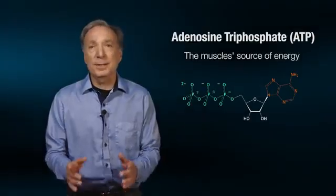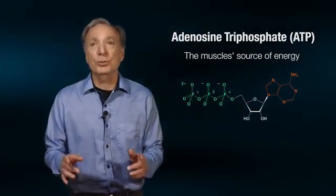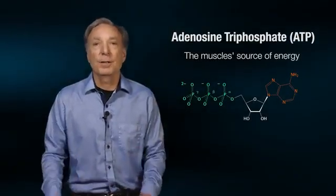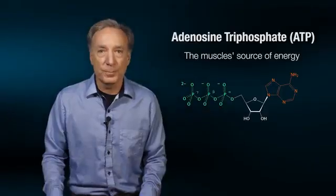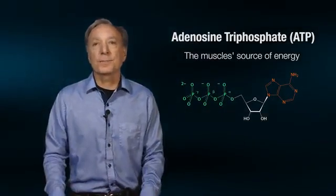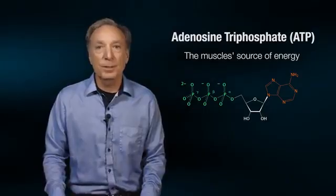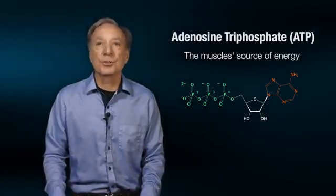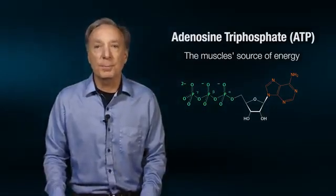ATP is the chemical currency used to supply the energy needed for muscle contraction. When this high-energy phosphate is broken down, it releases a tremendous amount of energy to the cell, initiating muscle contraction.